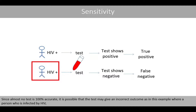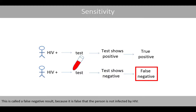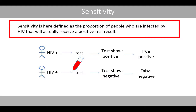Since almost no test is 100% accurate, it is possible that the test may give an incorrect outcome — for example where a person who is infected by HIV takes the test, which generates a negative result. This is called a false negative result because it is false that the person is not infected by HIV. A false negative result would mean that the person who is infected by HIV will get the wrong information of being healthy. Sensitivity is defined as the proportion of people who are infected by HIV that will actually receive a positive test result.